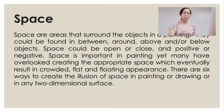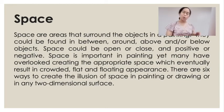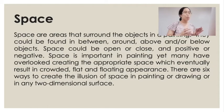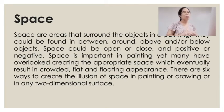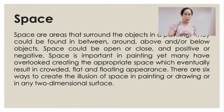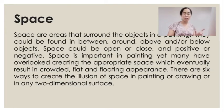Let's go with space — another element of art in general. These are general elements of art, not just specific to two-dimensional art, but art in general. Space refers to the areas that surround the objects in a painting. They could be found in between, around, above, or below objects. Space can be open or closed, and positive or negative. Space is important in painting, yet many have overlooked creating appropriate space, which can result in a crowded, flat, and floating appearance. There are six ways to create the illusion of space in a two-dimensional surface.